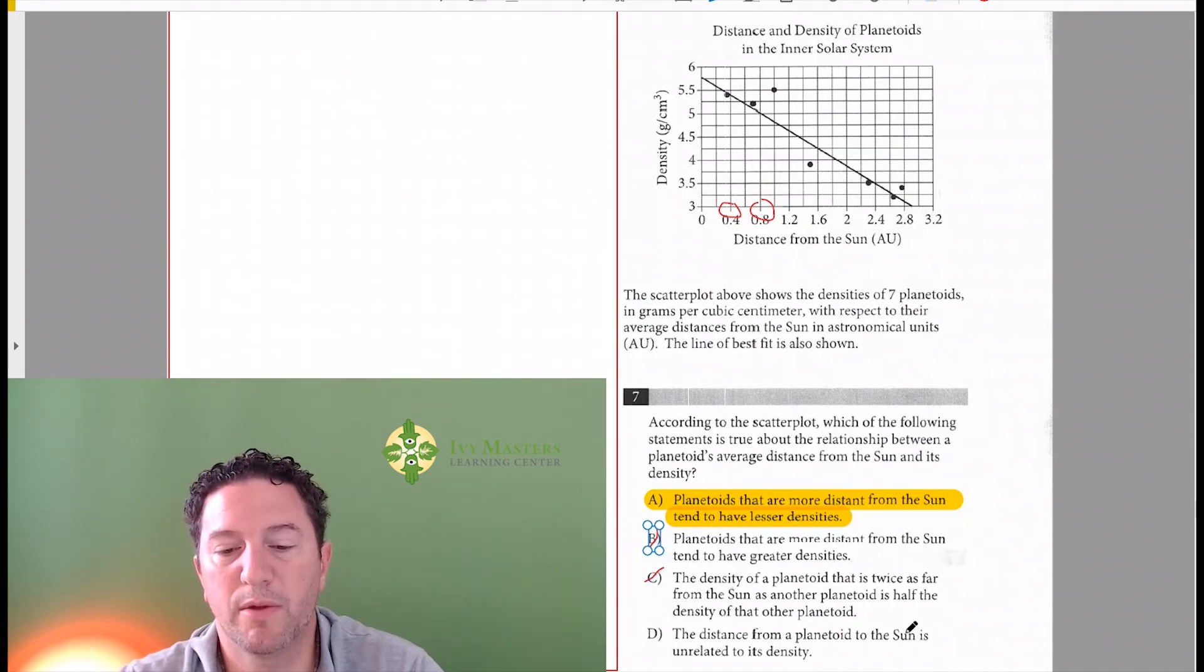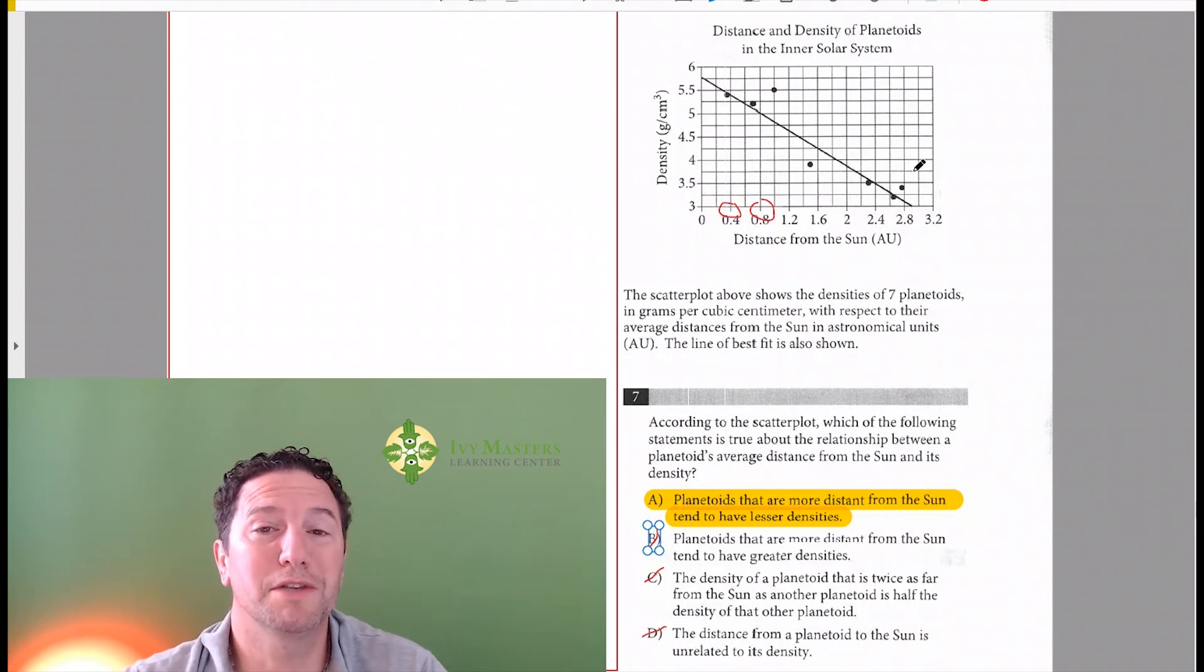Answer choice D: The distance from the planetoid to the sun is unrelated to the density. In that case, we'd have dots all over the place and we wouldn't even be able to make a line of best fit. Your correct answer is A.